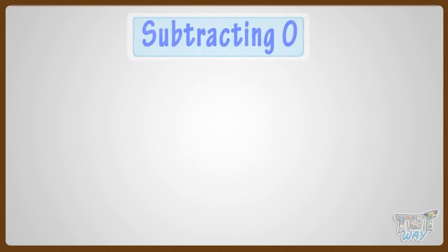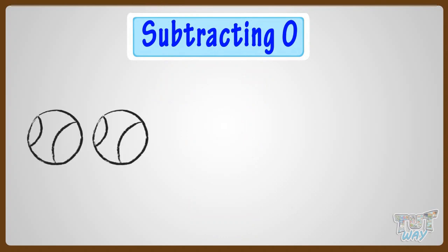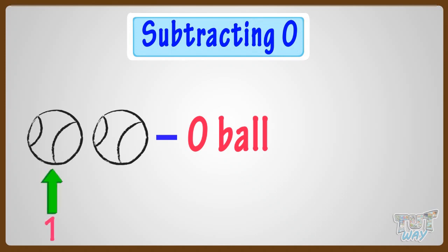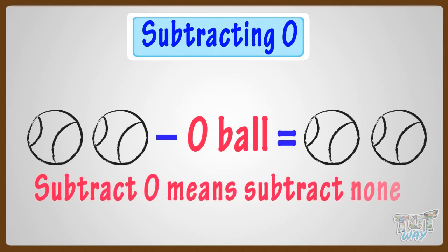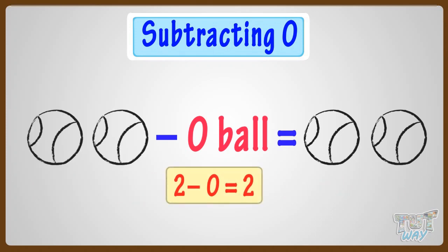Now we will learn subtracting 0. Let's start with an example. Two balls are drawn here. If I do not erase any, how many balls will be left? Let's count. 1, 2. So, 2 balls are left. That is, by subtracting 0 ball or no ball, the number of balls remain the same. Subtracting 0 means subtracting none. We can write it as: 2 balls minus 0 ball equals 2 balls, or 2 minus 0 equals 2.